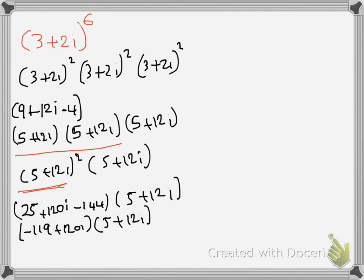Now I would expand normally, just as you are expanding two brackets in algebra. So we will have negative 119 times 5, that gives me negative 595. And then 119 times 12i, that is 1428i, so it is negative 1428i.